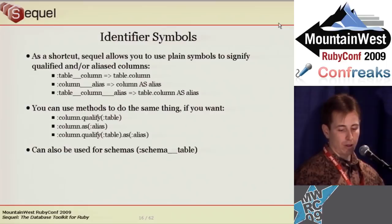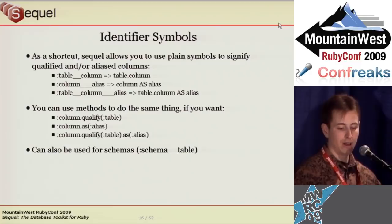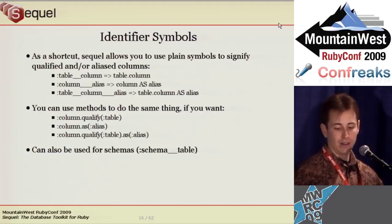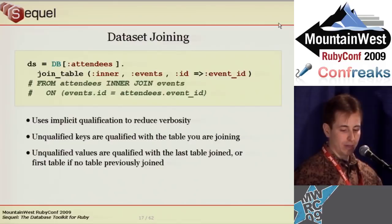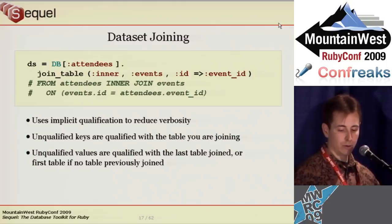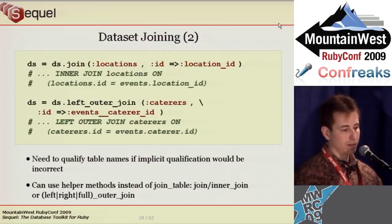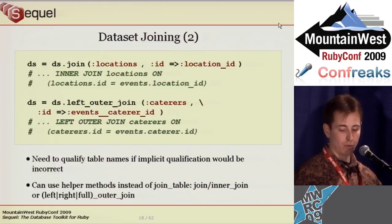Sequel uses symbols for columns, tables, and schemas. Because columns often need to be qualified or aliased, you can specify the qualifier and alias in the symbol itself. A double underscore separates a table from a column, and a triple underscore separates a column from an alias. You can also use methods for the same thing, and schema-qualified tables are well supported. Sequel makes joining tables easy and flexible — you provide the join type, table, and conditions. The typical foreign key to primary key join uses a hash, with the key being the column in the table being joined and the value being the column in the current or last joined table. You can also use expression filters, using joins, or natural joins.